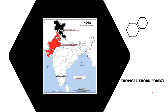The tropical thorn forest is commonly found in the dry regions of Rajasthan, Gujarat, Haryana, and Punjab, where the rainfall is comparatively less — less than 50 cm.